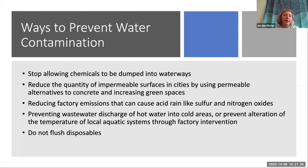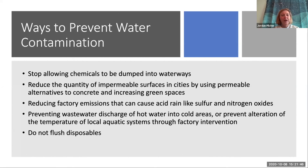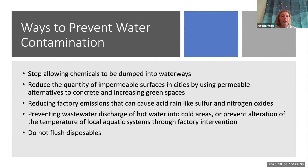There are several ways to prevent water contamination. We need to stop allowing chemicals to be dumped into waterways in the first place — a big problem is that we put things in the water before knowing their health risks, and they're nearly impossible to get out. We also need to reduce the quantity of impermeable surfaces in urbanized areas; concrete and asphalt make runoff much more severe, negatively affecting water quality. Reducing factory emissions also matters because air pollution creates smog and acid rain that affects the pH of water.